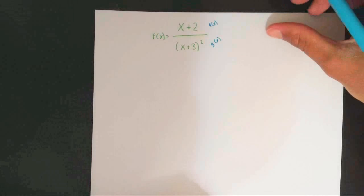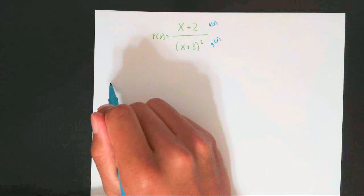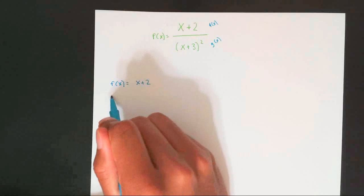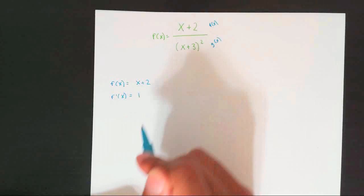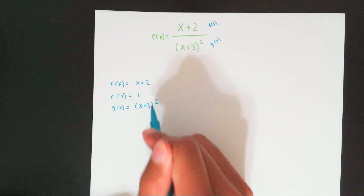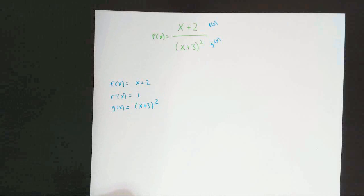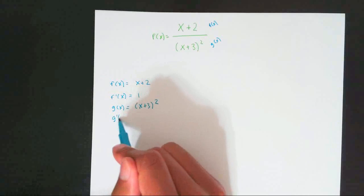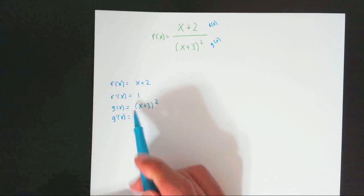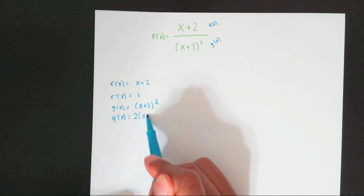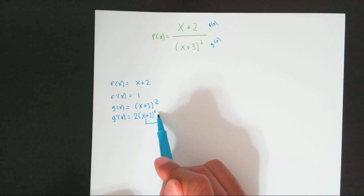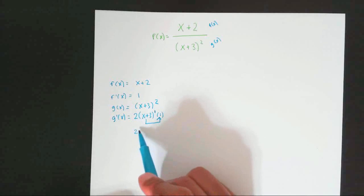Now once we establish that, we're going to take this to the side. f(x) is equal to x plus 2, and the derivative of f(x) is just 1. Then g(x) is the bottom: x plus 3 squared. Now finding this derivative is a little bit challenging because it's an exponent, which means we have to do chain rule. So we bring the 2 to the front, keep the inside the same, subtract the exponent by 1, take the inside and find its derivative — which is just 1 — then multiply first and last. That's going to leave you with 2(x plus 3).